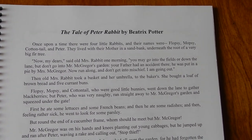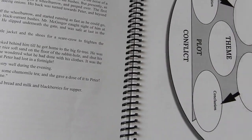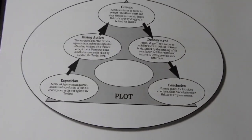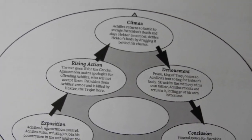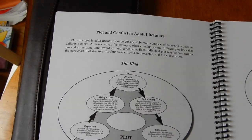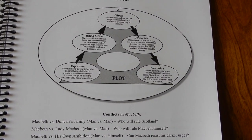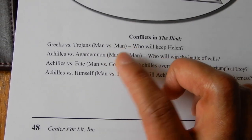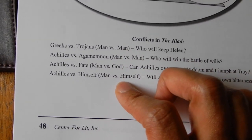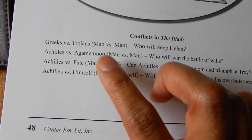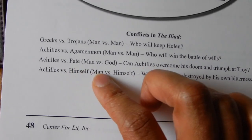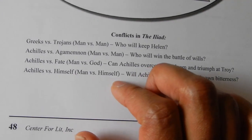He uses The Tale of Peter Rabbit to go over plot and conflict, with questions like 'Does the protagonist get what he is after?' Then he goes into the story chart using examples from the Iliad and Macbeth. For the Iliad, you ask what kind of conflict it is — there can be more than one. It's Greeks versus the Trojans, so man versus man; it's also man versus God — Achilles and fate; and man versus himself.